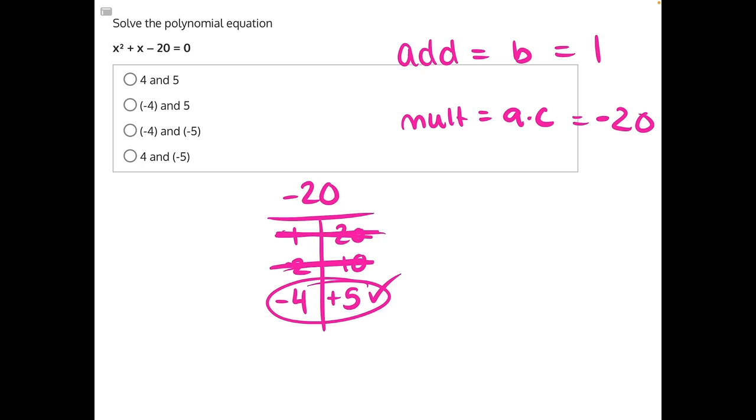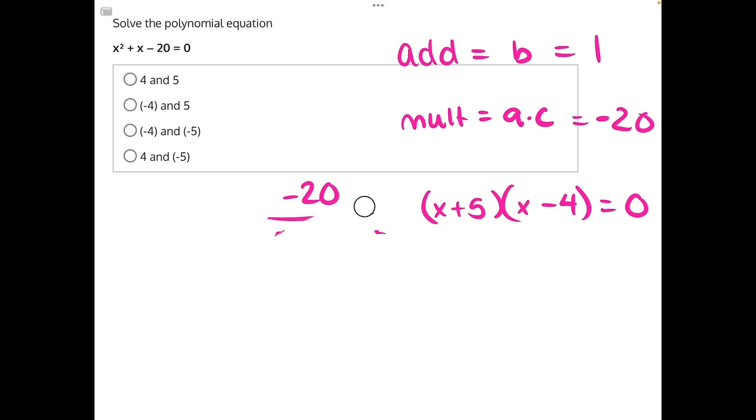That will allow us to create these two binomials: x plus 5 and x minus 4, both equal to 0. Now that we have both our equations, we set each of them equal to 0 and solve for x. We will start with x plus 5 is equal to 0, and x minus 4 equals 0.